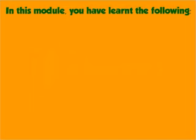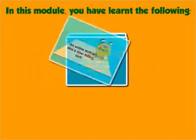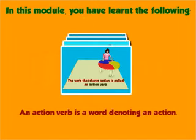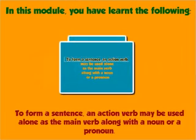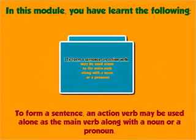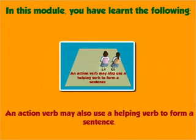In this module, you have learned the following: An action verb is a word denoting an action. An action verb is also a time-telling verb. An action verb may also use a helping verb to form a sentence.